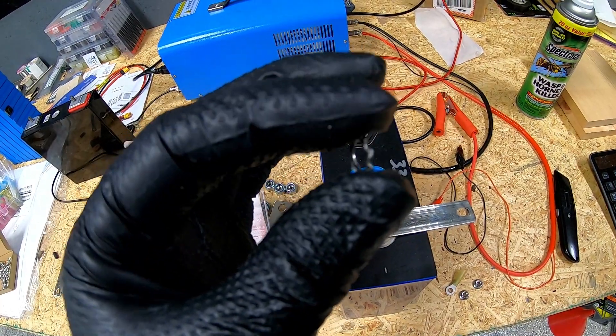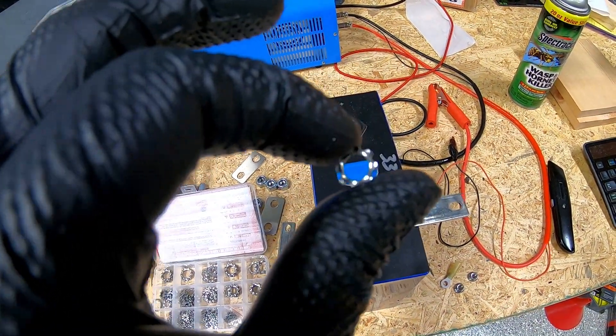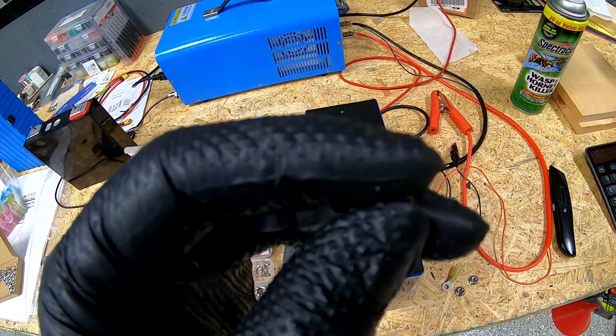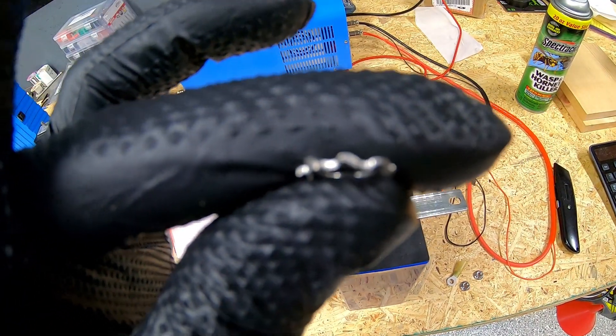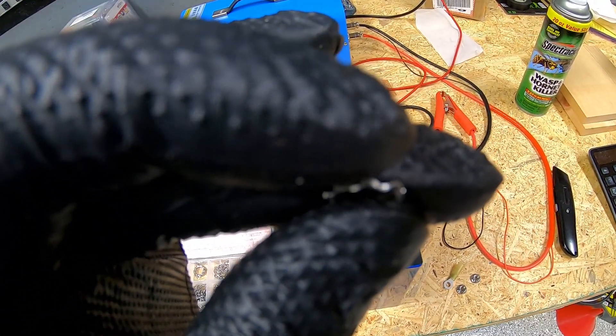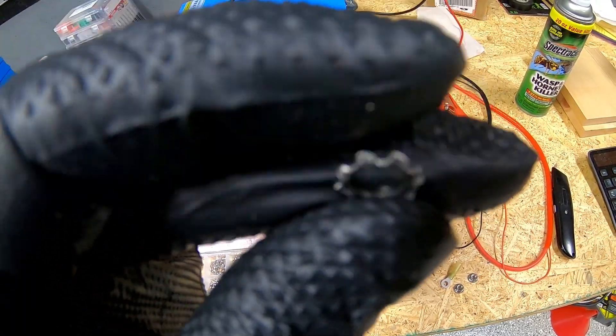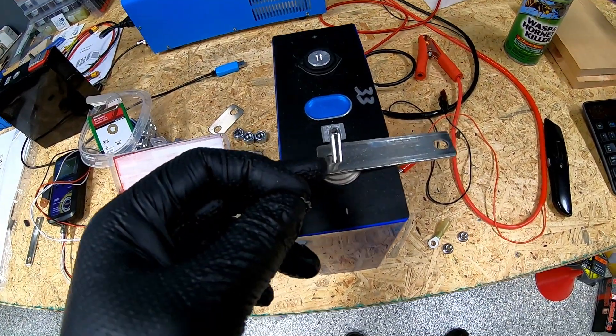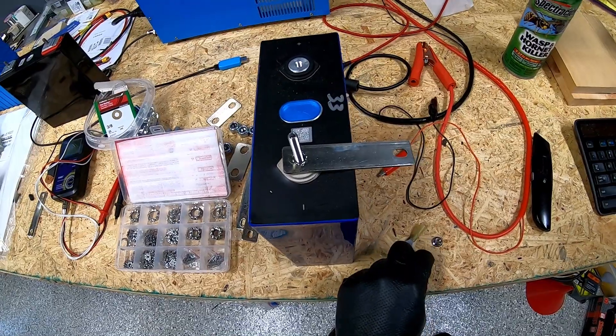These are what we call here in the states lock washers, but they're not the split type lock washers. These are star tooth type lock washers. What we found out is that those teeth do a really nice job of being able to bite into that bus bar as well as that serrated flange nut.